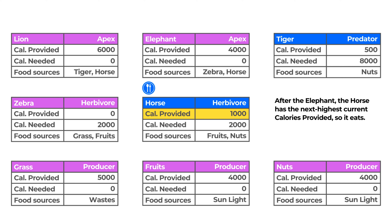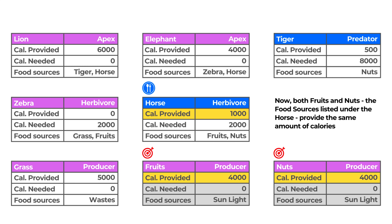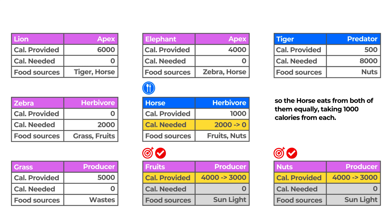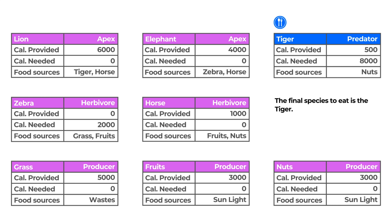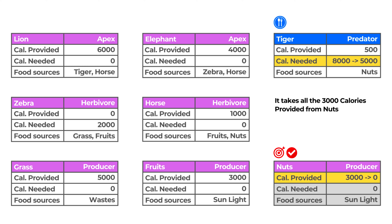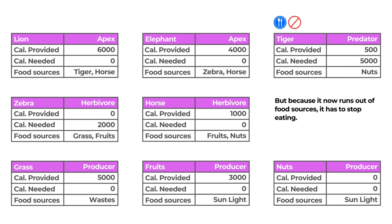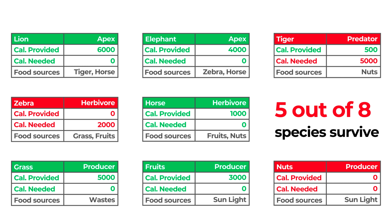After the elephant, the horse has the next highest current calories provided, so it eats. Both fruits and nuts — the food sources listed under the horse — provide the same amount of calories, so the horse eats from both equally, taking 1,000 calories from each. The horse now has zero calories needed, while fruits and nuts each have 3,000 calories provided left. The final species to eat is the tiger. It goes for its sole food source, nuts, takes all 3,000 calories provided, but because it runs out of food sources it has to stop eating. Now that all species have eaten, we run the survival check — 5 out of 8 species survive, so this food chain needs to be fixed.